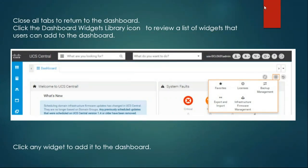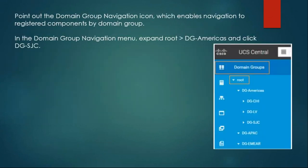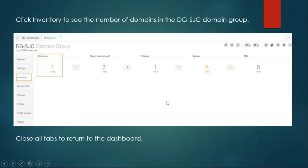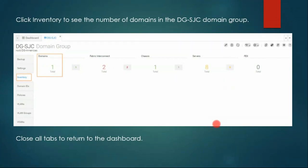These are the features inside UCS Central. The overall goal is to make everything easy to understand and to unify everything in a single management plane or GUI. In the lab section, you can go inside domain groups — go to Route, then DG America, then DG SJC — a new page will open where you can check domain IDs, policies, VLANs, VSAN groups, and everything.